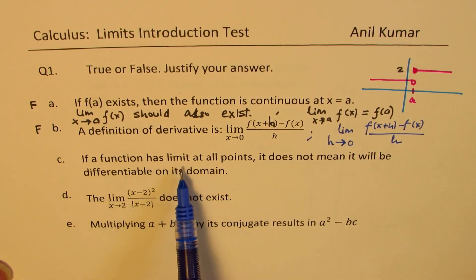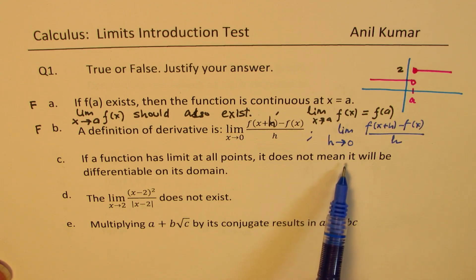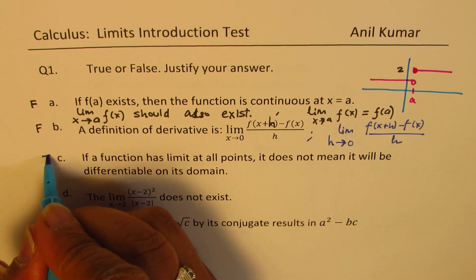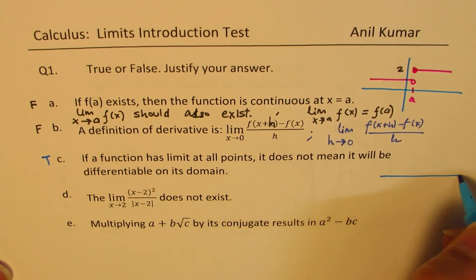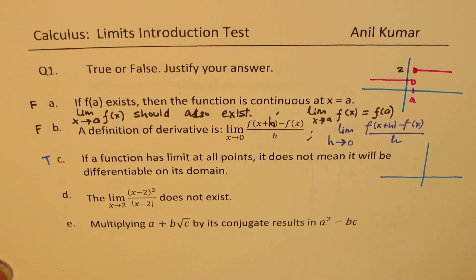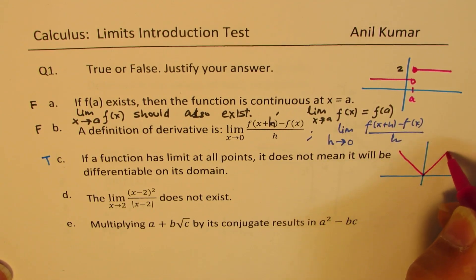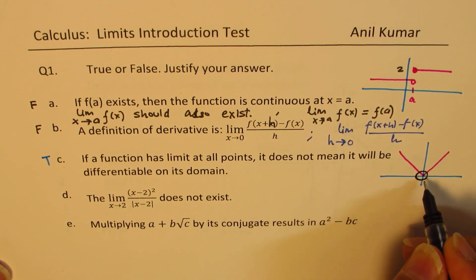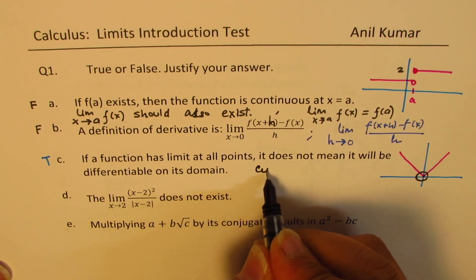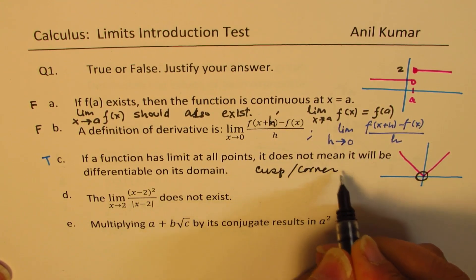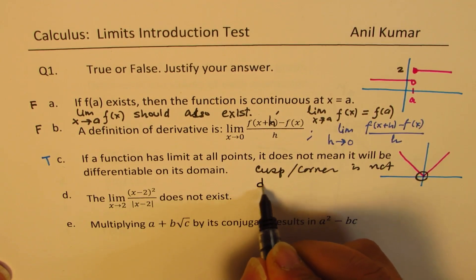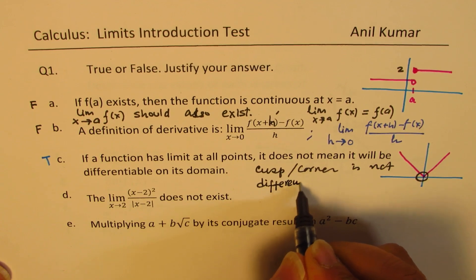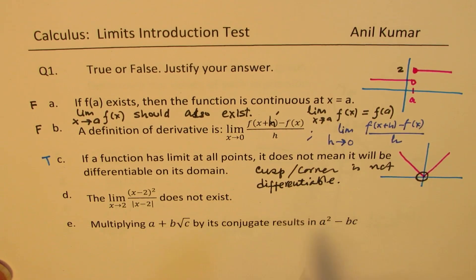C: If a function has a limit at all points, it does not mean it will be differentiable on its domain. This statement is true. For example, we have the absolute value function — the limit exists and it is a continuous function. However, it is not differentiable at the corner point. A cusp or a corner is not differentiable. We will talk about differentiability more in the next test.